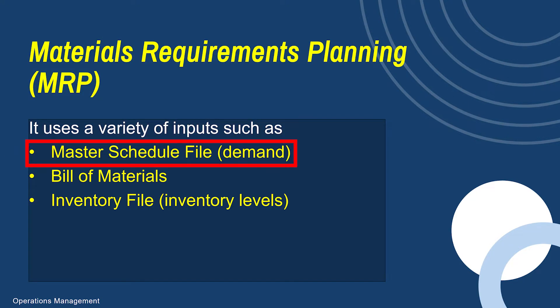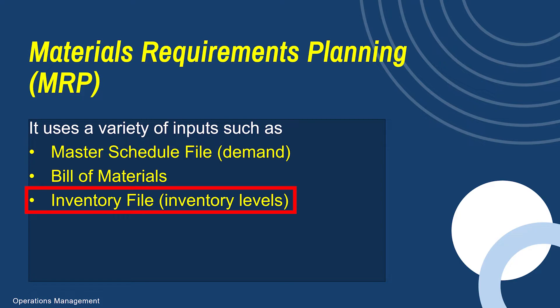MRP includes three important things: the master schedule file, the bill of materials — which is just a list of the material — and inventory files showing where your inventory levels are. MRP is a system in which you can plan for production. This is about your raw material, not the master production schedule producing your finished good.